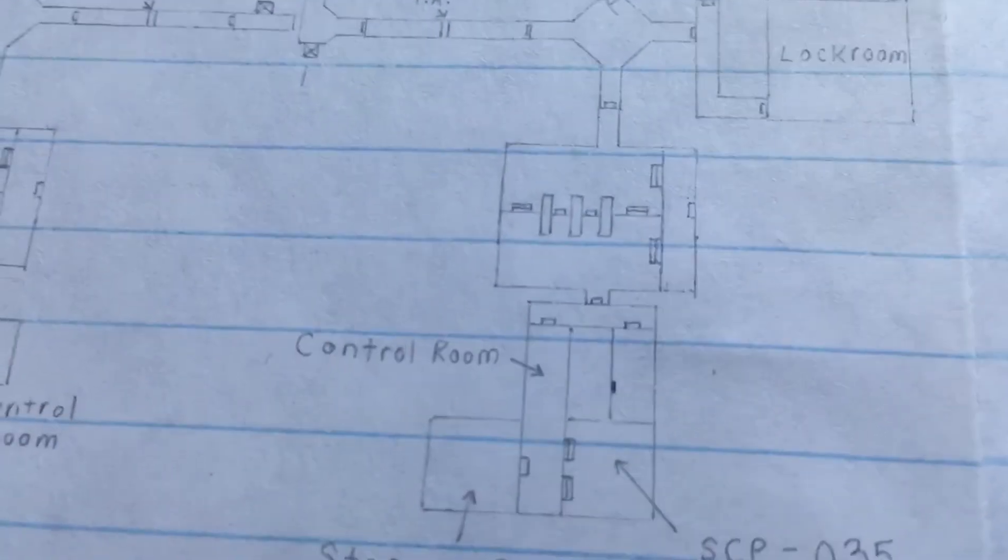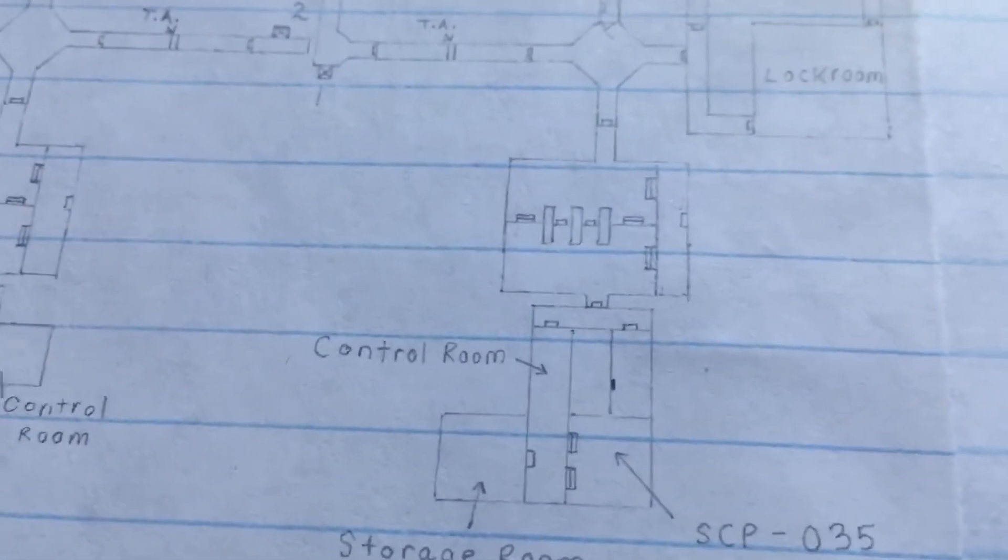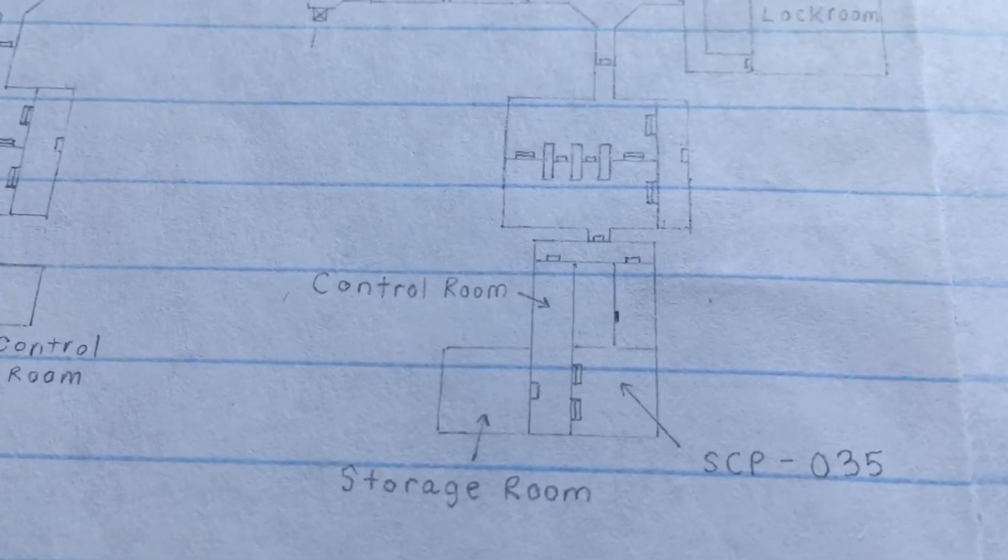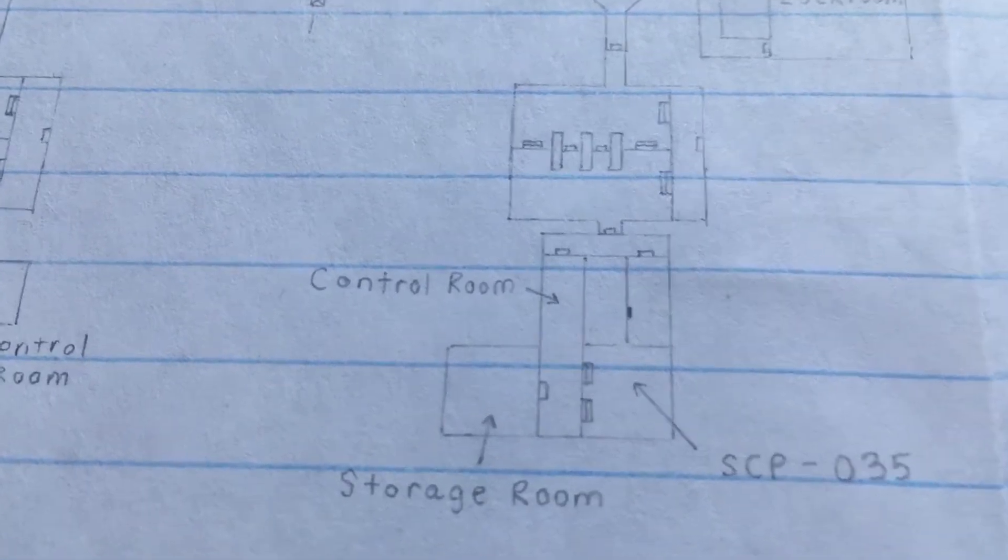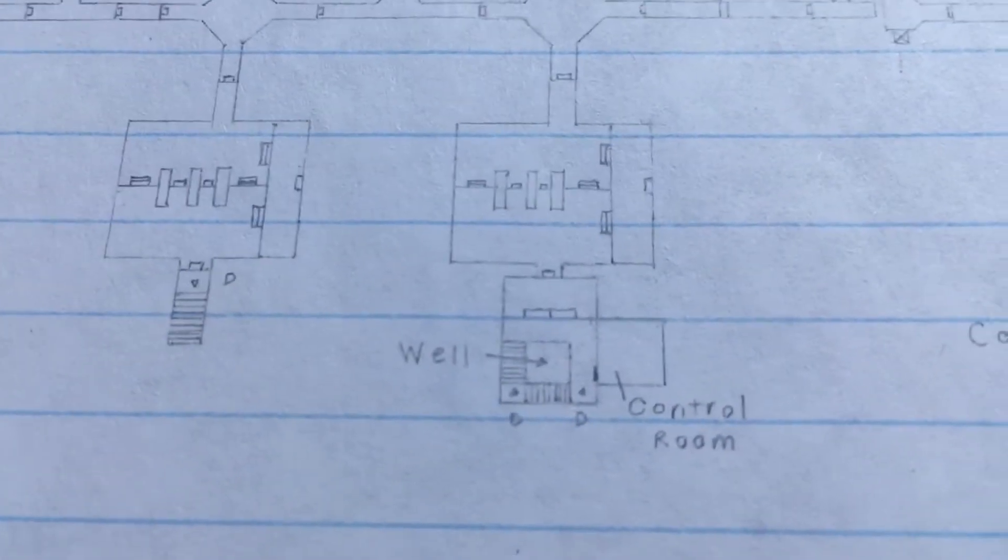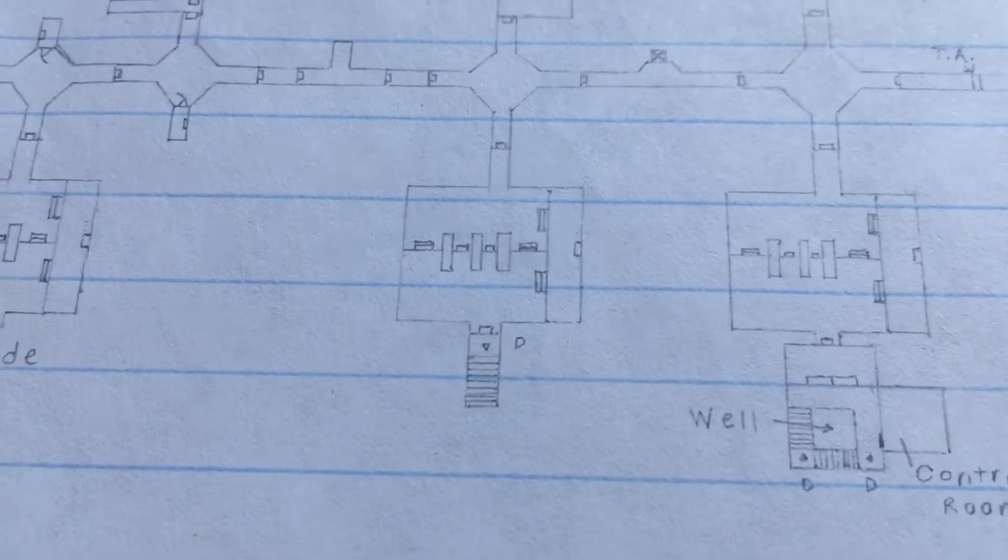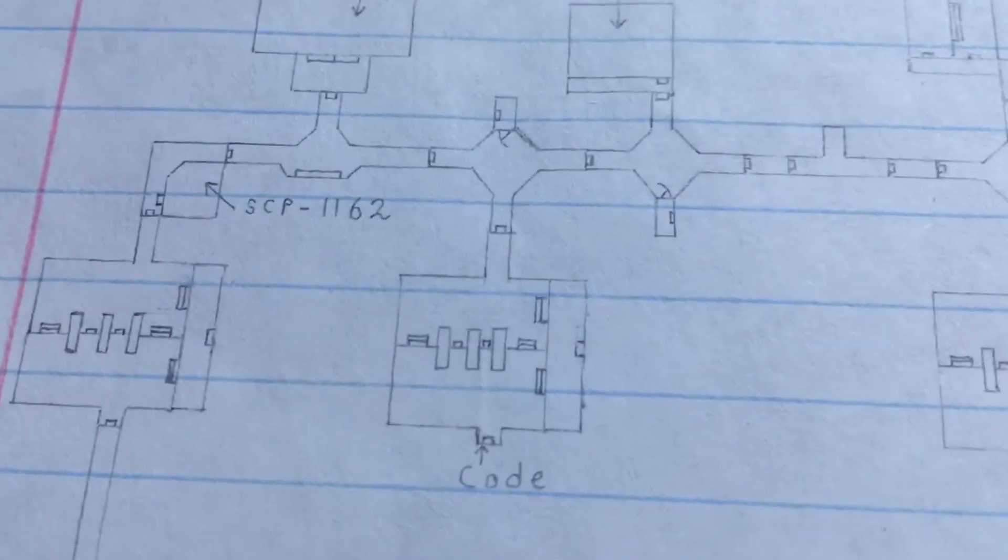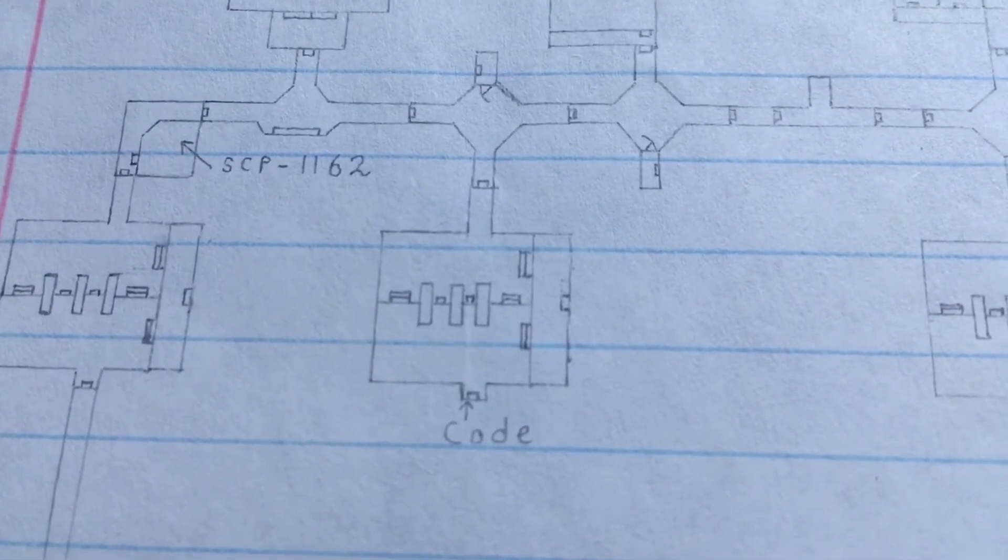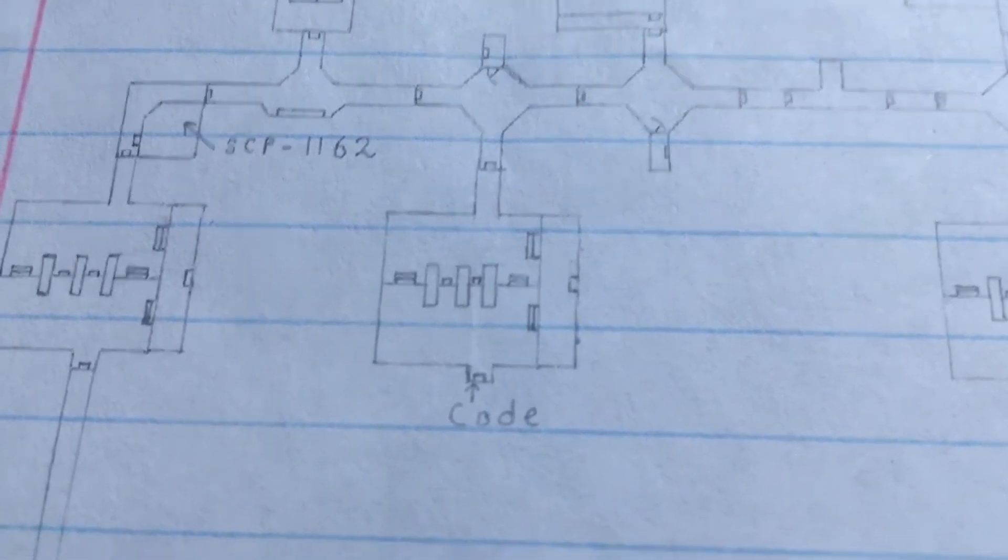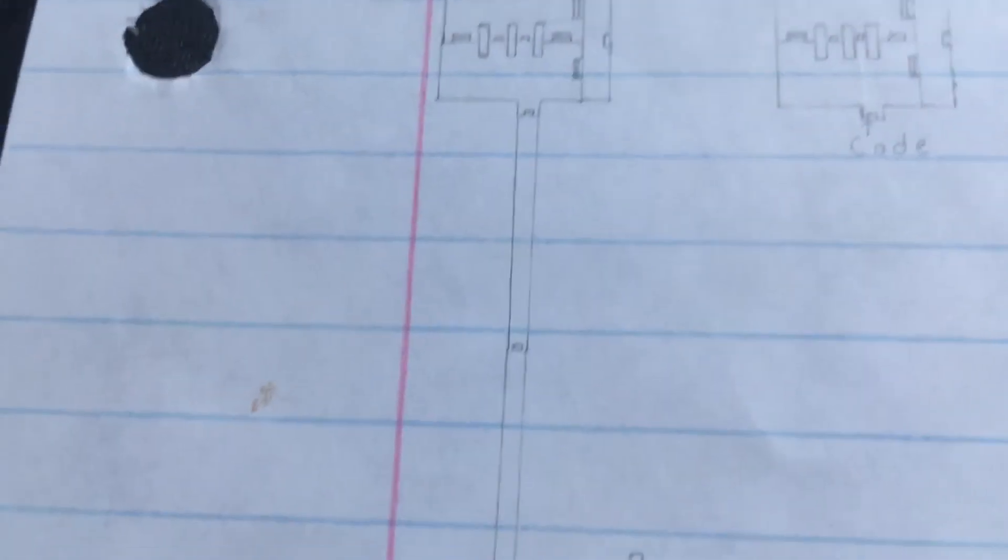That's going to be it for light containment. Here in heavy containment, some of these are dead ends that just lead to one room. You have 035, which has a really big room. Stairs lead down to 895's chamber, but only the control room is up here. And these stairs lead down to 079. Then there's a code here - this is a dead end. Even if you noclip past it, there's nothing here and the code doesn't exist.